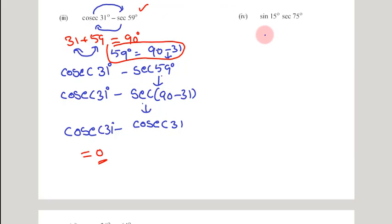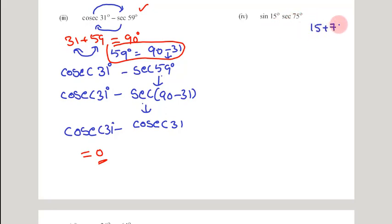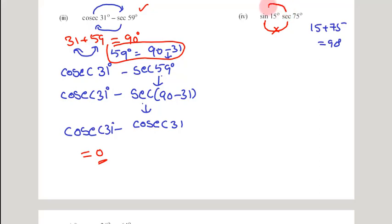Let us see the fourth question. In the fourth question, we have: sin 15 degrees multiplied by sec 75 degrees. Here, the numerical values 15 and 75 add up to 90, so these are complementary angles. But if you observe the trigonometric ratios — sine and sec — sine cannot be written directly in terms of sec using complementary angles, and sec cannot be written in terms of sine using complementary angles.